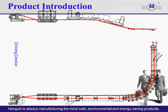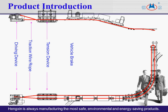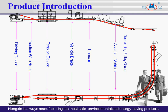The main components include: driving device, traction wire rope, tension device, towing vehicle, carrier vehicle, passing pulley group, carrying pulley group, and return device.